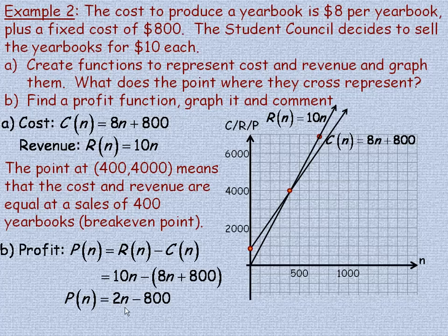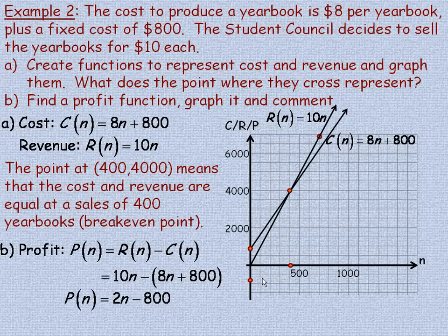To graph the profit function, if we sell no yearbooks, 2 times 0 is 0, so the profit is minus 800. If you haven't sold any yearbooks, you still pay the fixed cost of $800 — so we start at minus 800 on the graph. At N = 400, 2 times 400 is 800, minus 800 is 0, so the profit is 0. That confirms the break-even point: when cost and revenue are equal, profit is zero.